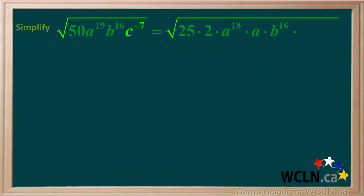c to the negative 7th can be written as c to the negative 8th times c. The exponents negative 8 plus 1 add up to negative 7, and the leftover c has an exponent of 1, which is positive.